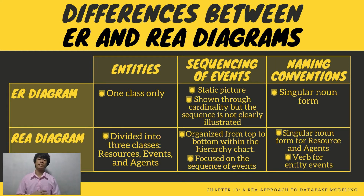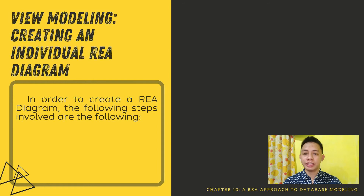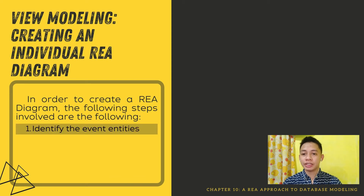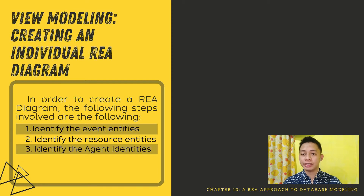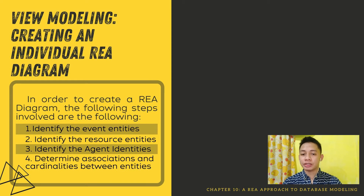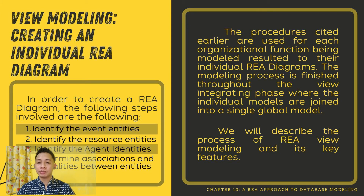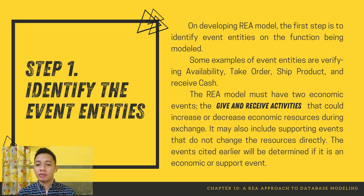Now that you know the differences between ER and REA diagrams, let's move on to the steps for View Modeling. This will be discussed by the next reporter, Mr. Paulo. Thank you, Mr. Estrada. My topic will focus on View Modeling — Creating an Individual REA Diagram. To create a REA diagram, the following steps are involved: First, identify the event entities. Second, identify the resource entities. Third, identify the agent entities. And fourth, determine associations and cardinalities between entities. These procedures result in individual REA diagrams for each organizational function being modeled. The modeling process is completed through view integration, where individual models are joined into a single global model. We will describe the process of REA view modeling and its features. The first step is to identify the event entities.